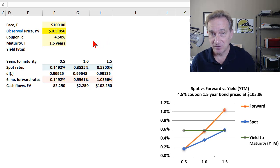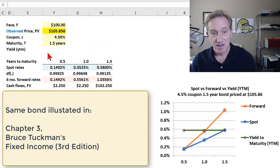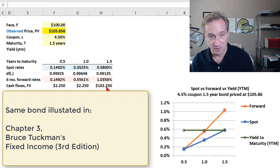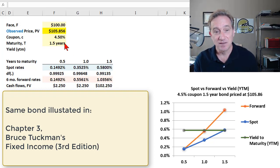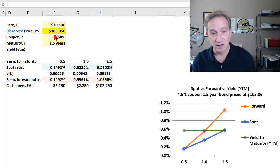So I have Tuckman's example from Chapter 3, and it's a bond that matures in 18 months or one and a half years. It's a semi-annual pay coupon bond with a coupon rate of 4.5%, meaning that it pays $2.25 in six months, then in one year, second coupon, and final coupon in 18 months or one and a half years of $2.25 plus return of the principal. And this bond, we observe a price of $105.856.